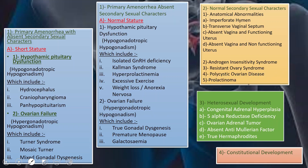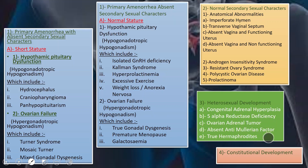The third group is heterosexual development, which includes congenital adrenal hyperplasia, 5-alpha reductase deficiency, ovarian adrenal tumour, absent anti-Müllerian factor, and true hermaphrodite. The fourth group is constitutional development.